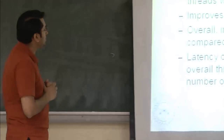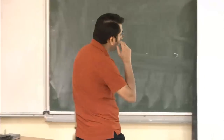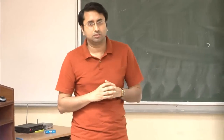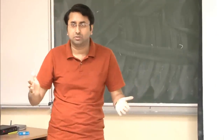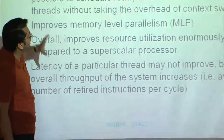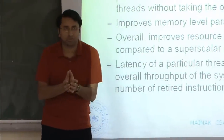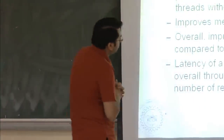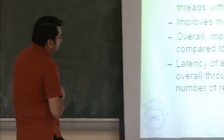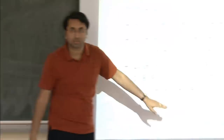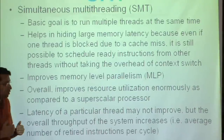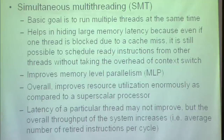Overall, it improves resource utilization enormously compared to a superscalar processor. In a superscalar processor, there is a single thread running at a time, and whenever the thread takes a cache miss at the last level of the cache hierarchy, the processor will stop for a long time and resources will be mostly underutilized. Here, we are trying to package many such superscalar processors into a single chip in some way — it allows you to switch out one thread having a cache miss, bring in another thread and let it run, while the cache miss gets resolved. The latency of a particular thread may worsen a little bit, but the overall throughput increases — every unit of time you will be completing more instructions. The average number of retired instructions per cycle increases.